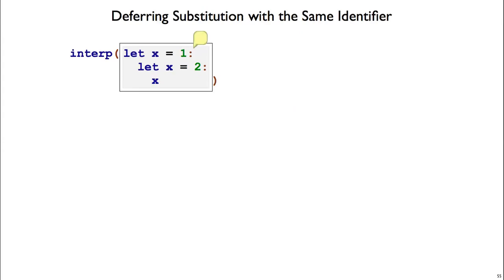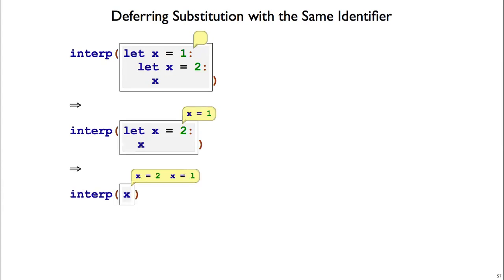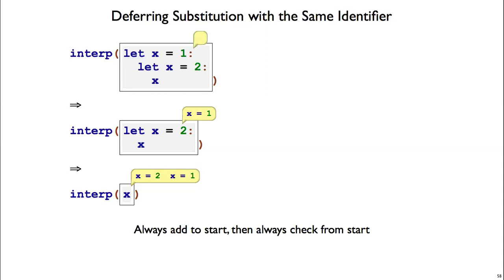One thing to note is what if we have the same identifier twice? So here, let x equal 1 goes into our bubble, and then let x equal 2 also goes into our bubble. If this is implemented as a plain set of bindings, there can be some confusion. So we need to have more structure than just a plain set — the right thing to do is to keep a list. Our bubble is going to be implemented as a list of expressions. When we add a new binding, we add it to the front of the list. When we go to look up a binding, we also look from front to back. So in this case, we would look up x equals 2, which is the first thing we encounter, and stop with that. Always add to the start. Always check from the start.